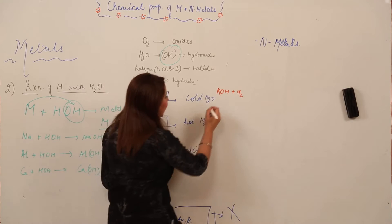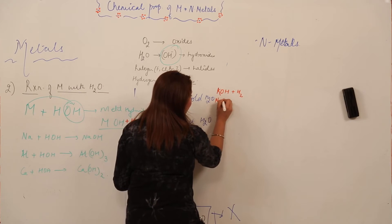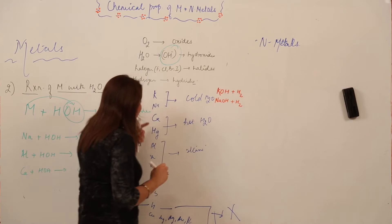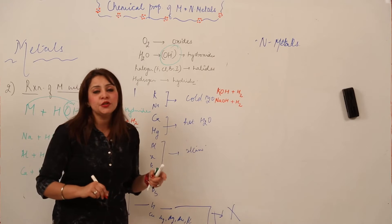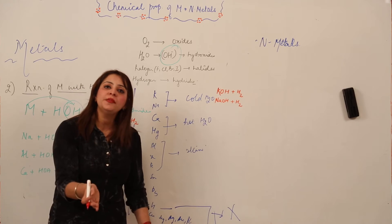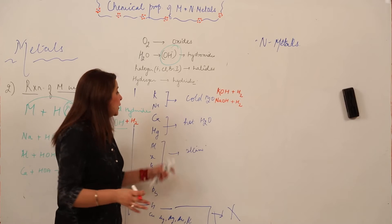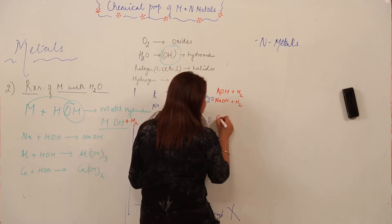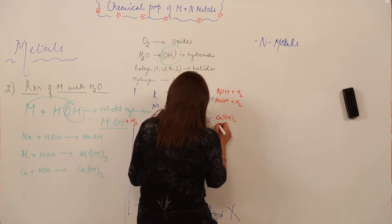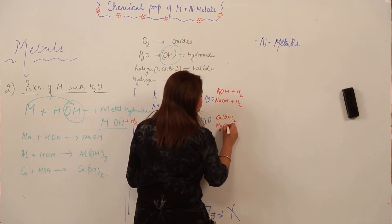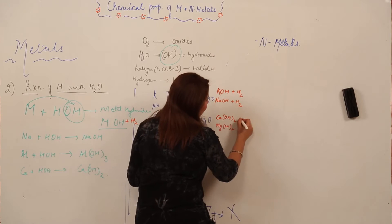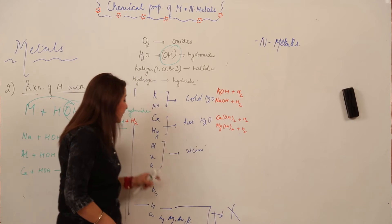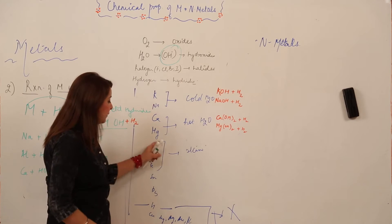When we are talking of sodium, again it will be forming sodium hydroxide with H2. But when we are talking about calcium and magnesium, they will also form their respective hydroxides. But the formula is going to be different because their valency is different, and moreover they will react with water on heating — that means they react with somewhat boiling water.